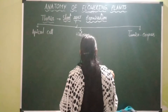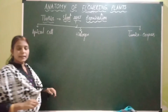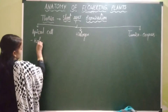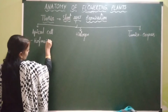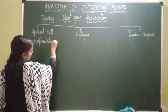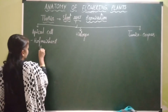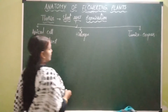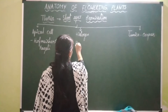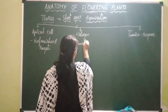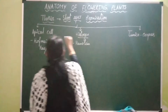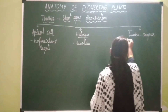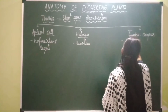The apical cell theory is given by two scientists — Hofmeister and Nägeli. The histogen theory is given by scientist Hanstein, whereas the tunica corpus theory is given by scientist Schmidt.